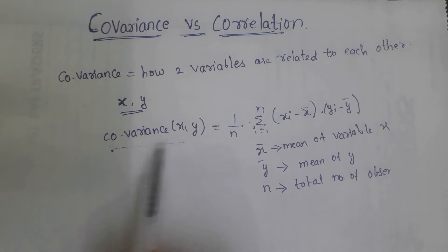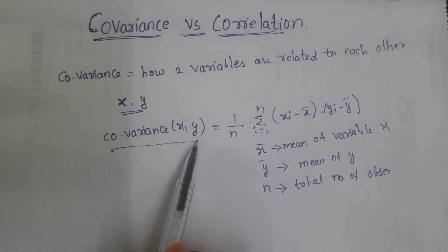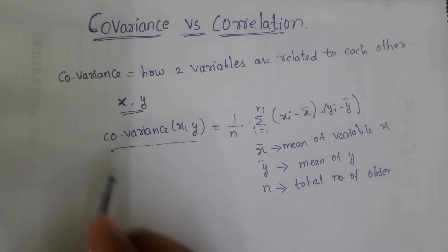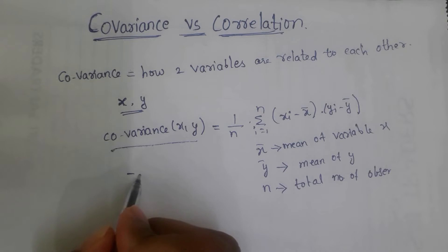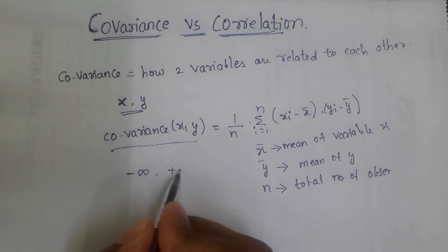This is the covariance formula. The covariance value ranges from minus infinity to plus infinity.